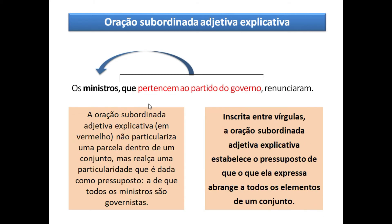'Os ministros, que pertencem ao partido do governo, renunciaram.' Utilizando vírgulas, estou explicando que somente aqueles que pertencem ao partido do governo renunciaram — é uma explicação. Já no primeiro exemplo, sem vírgula, eu restringia. O pronome relativo retoma o substantivo da oração principal, e eu tenho que dividir as duas orações para fazer essa classificação.